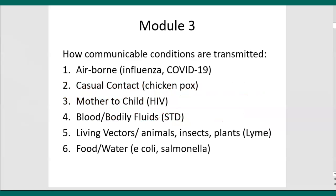Communicable conditions are transmitted in any number of ways. One way is through the air — these are the airborne conditions. In this context, we consider influenza and, of course, COVID-19. Some are communicated through casual contact, like chicken pox or perhaps mumps. Others involve transmission between mother and child, as in the case of HIV. Others are communicated through contact with bodily fluids or blood, such as STDs.